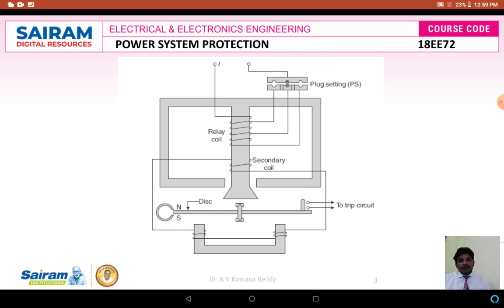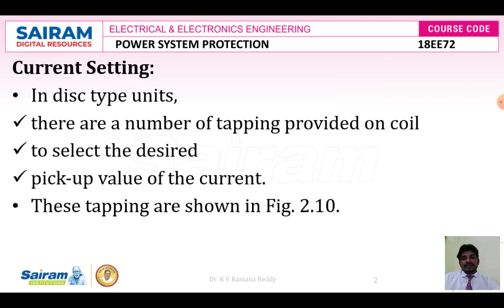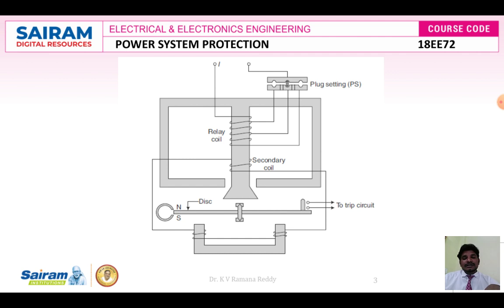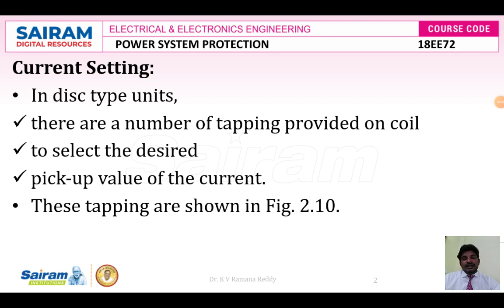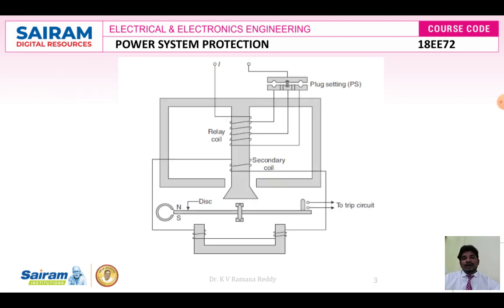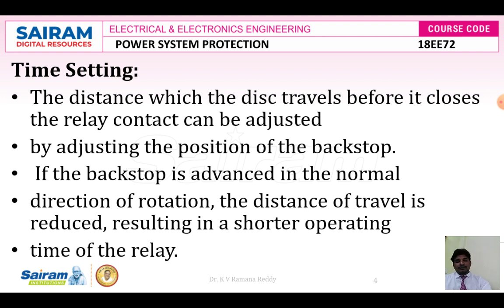The number of turns in the relay coil is changed when it is used at different ratings of supply voltage, like 11 kV, 33 kV, and 66 kV. This is called current setting — how we set the relay to function according to the operating voltage or desired voltage. In this way, we can meet the desired actuating current to operate according to our predetermined value or pickup value of the current.